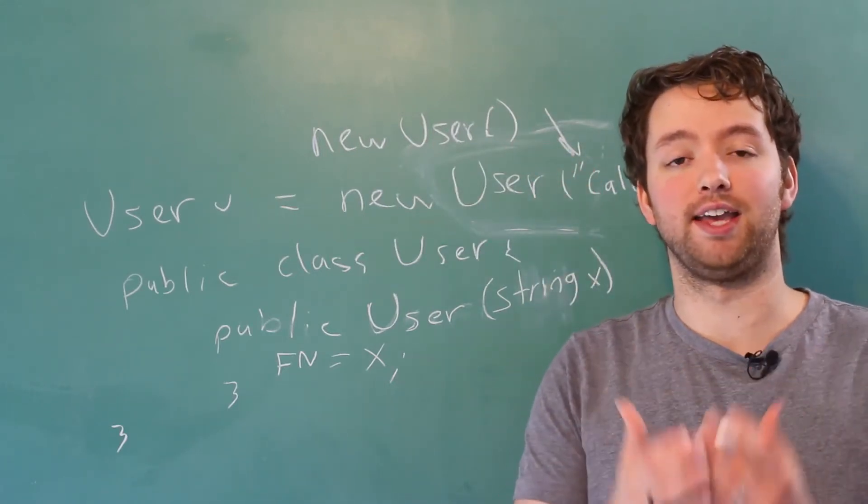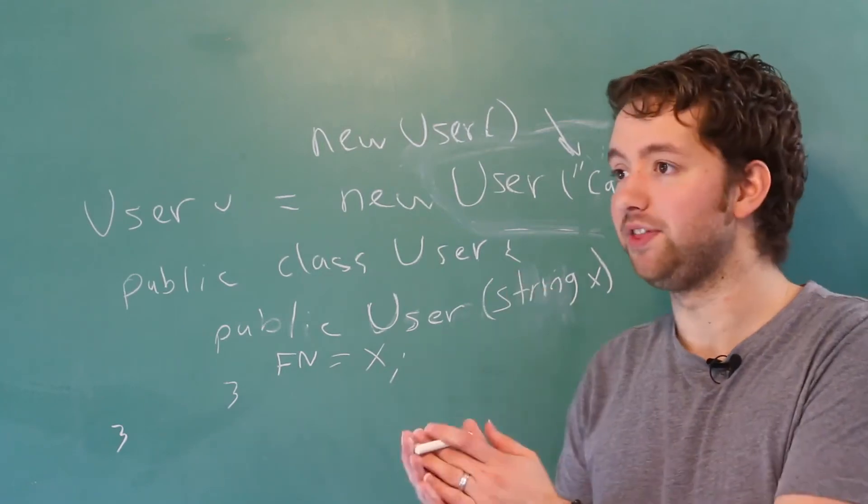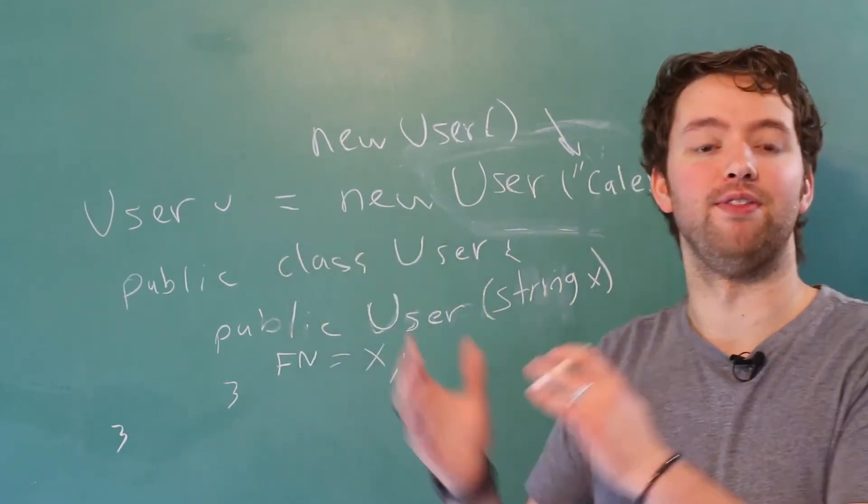So that's your introduction. Again, constructors are just methods with no return that allow you to instantiate. And my camera just stopped recording, but I still got audio so to conclude, constructors just allow you to instantiate a class into an object. Thanks guys and I'll see you in the next video.